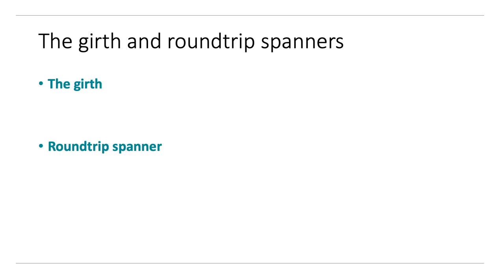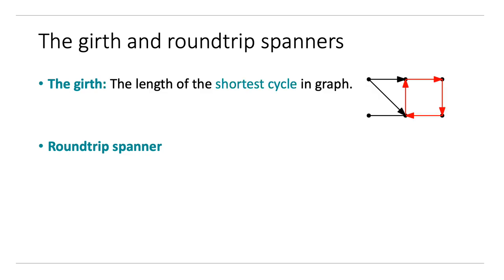Let's define both. The girth is the length of the shortest cycle in the graph. For example, the shortest directed cycle in this graph is the red one and has length 4. So the girth in this directed graph is 4.